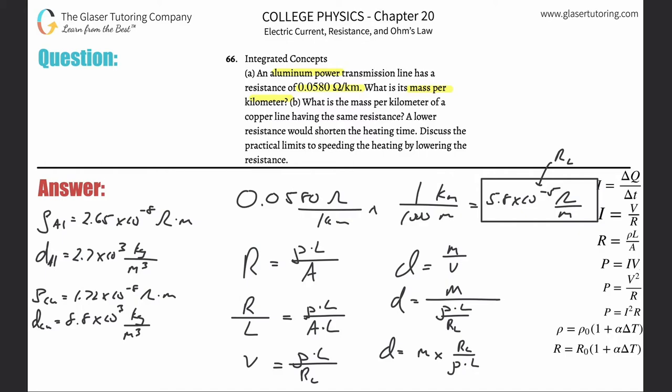So now what we need to do is solve for mass per length. So we can just combine this. The density is equal to mass times the resistance per length, all divided by the length multiplied by the resistivity. And lo and behold, there's the mass per length. So you got to bring these variables over to the other side. So the mass per length is going to be equal to the density multiplied by the resistivity all over the resistance per length. We know all these things now.